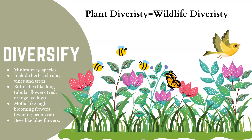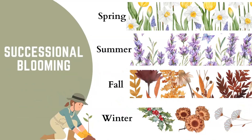Butterflies tend to like tubular flowers that are red, orange, and yellow. Moths like blooming flowers like the evening primrose. Bees can't see the color red — blue flowers attract bees. Also be sure to consider the plant's sunlight, water, and nutrient needs when selecting the species you introduce.